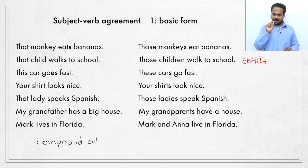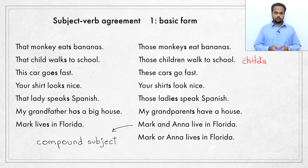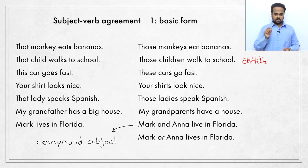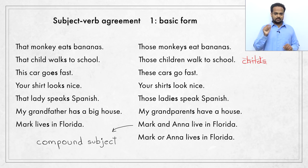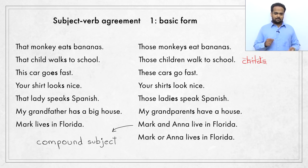This type of subject connected by AND is called a compound subject. There is another type of compound subject connected by OR: 'Mark or Anna lives in Florida.' Notice that we have a singular verb — lives. This is because the conjunction OR means that either Mark or Anna, one of those two, is in Florida — not both of them. So only one person lives in Florida, meaning the subject is considered singular and the verb is also in singular form.